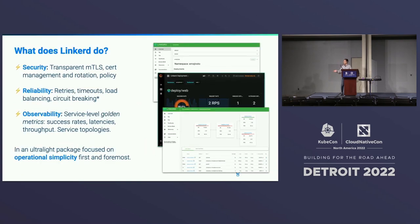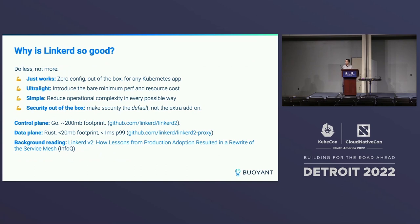As a service mesh, there is a sidecar proxy in every pod that's part of the mesh that adds a lot of really interesting functionality, like MTLS between all your services, reliability features like retries and timeouts, and a lot of observability features like layer 7 metrics on success rate, request rate, and latency. With a major focus on operational simplicity, the whole thing kind of works out of the box and doesn't require you dedicating a lot of brain power to making it work.